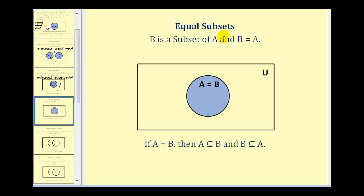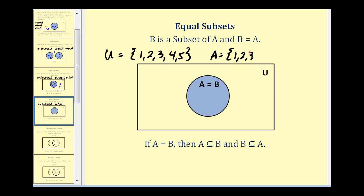And if we have equal subsets, that means B is a subset of A and B is also equal to A, so all the elements in A and B are in the same circle. So if the universal set was one, two, three, four, five, and set A contains one, two, and three, then B also contains the elements one, two, and three. And outside A and B would be four, five, and six.